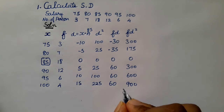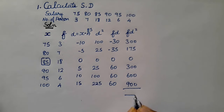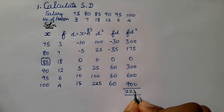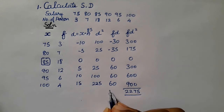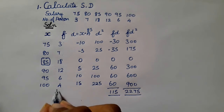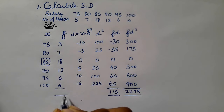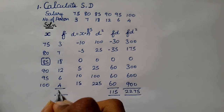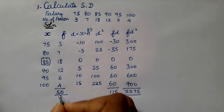The total of FD squared is 2275. The total of FD is 115. The total frequency N is 50.